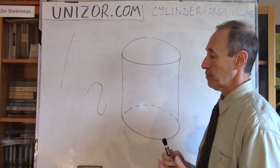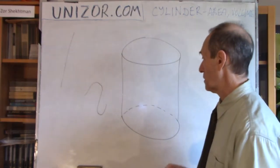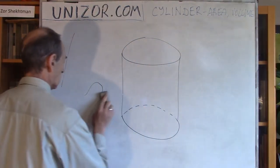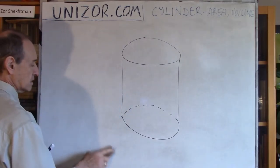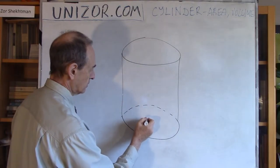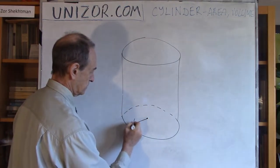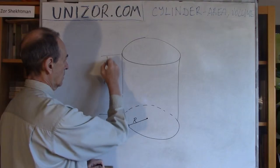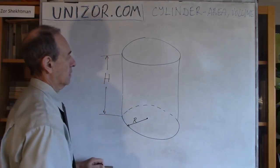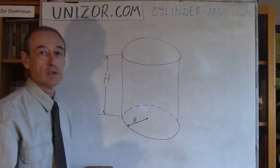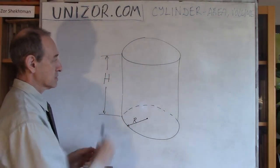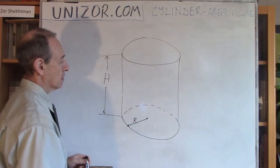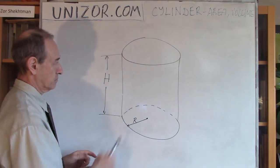What are the parameters that characterize this cylinder? There are two parameters that completely define it: the radius of the base circle, r, and its height or altitude, h — the distance between the two bases, between the top and bottom base. Both bases obviously have the same radius.